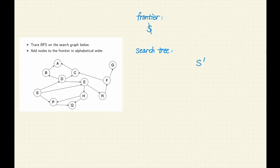S has three successors: D, E, and P. Let's add them to the frontier in alphabetical order and also add them to the search tree.